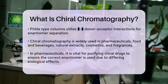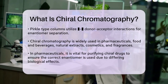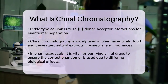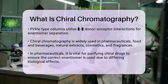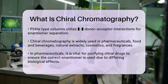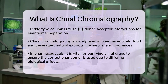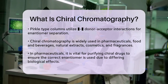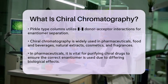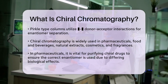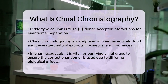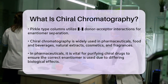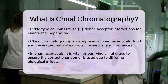Chiral chromatography is used in various industries, including pharmaceuticals, food and beverages, natural extracts, cosmetics, and fragrances. In the pharmaceutical industry, it's crucial for purifying chiral drugs to ensure that only the desired enantiomer is used, as different enantiomers can have different biological activities and side effects.